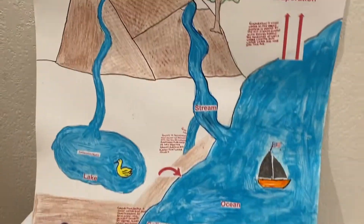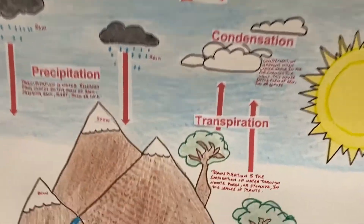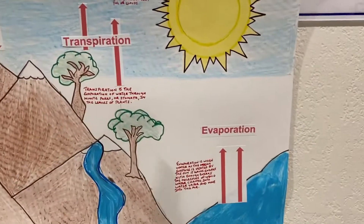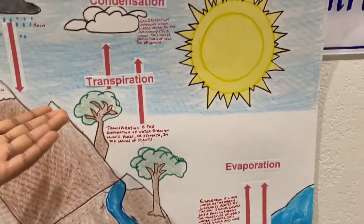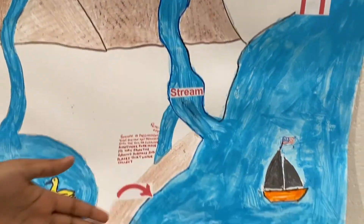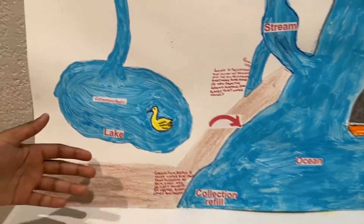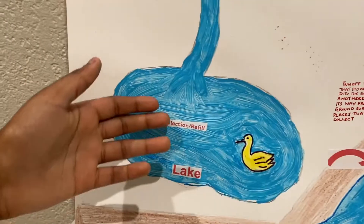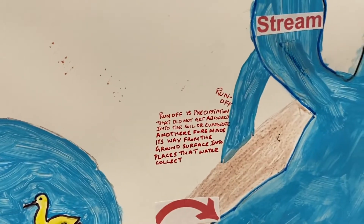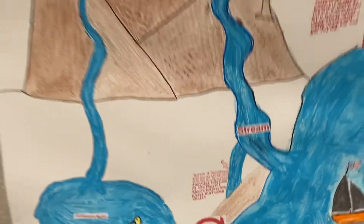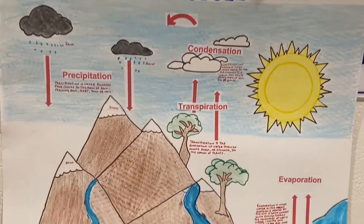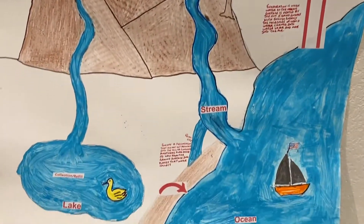As you can see, it has all the definitions: precipitation, condensation, evaporation, stream, ocean, collection, slash refill, and runoff right here. It has all the definitions and everything that is for the water cycle.